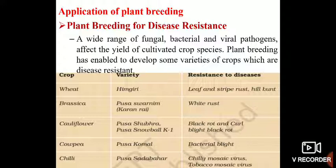In Cauliflower, Pousa Shubra and Pousa Snowball K1 have been created, and both these varieties are resistant to black rot and curl blight. In Cowpea, a variety known as Pousa Komal, which is resistant to bacterial blight, has been created through plant breeding.